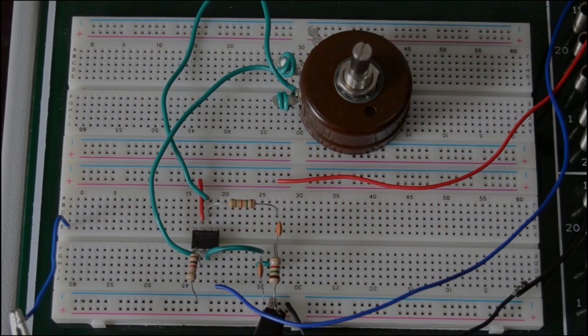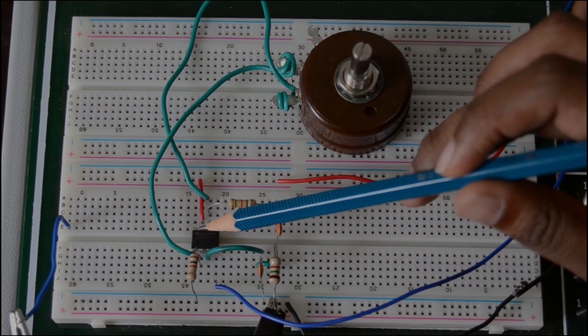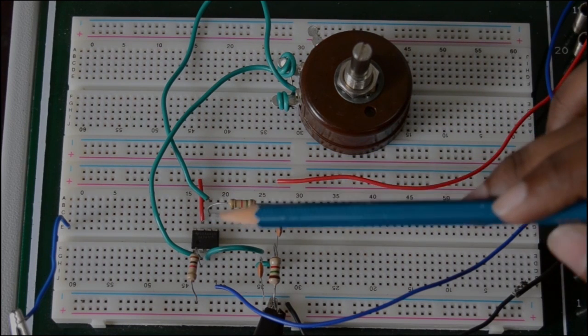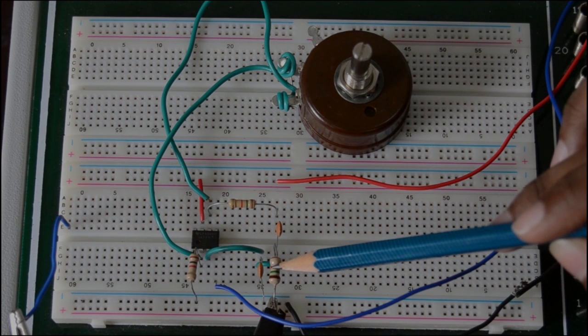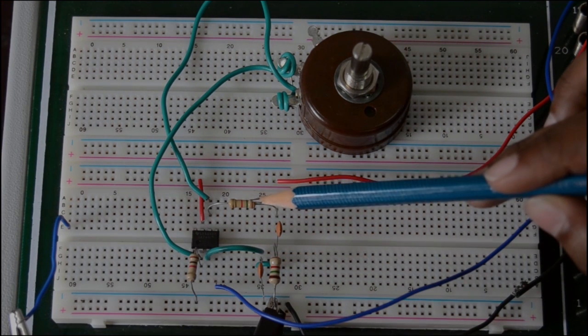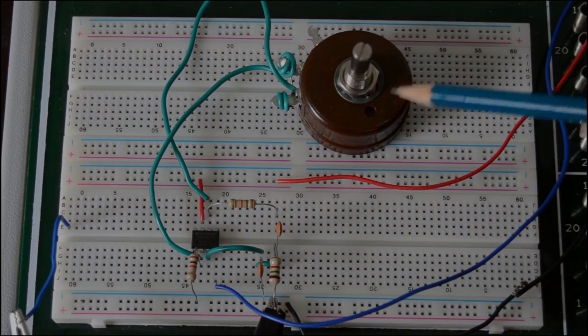This is the circuit which has been set up on the breadboard. Now let's analyze the circuit. The circuit consists of the Op-Amp, which is this one, the input resistance Ri, and the feedback network which consists of the parallel RC network, the series RC network, and the feedback resistance is provided by the potentiometer.